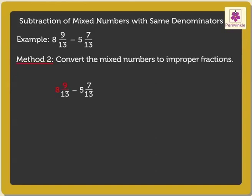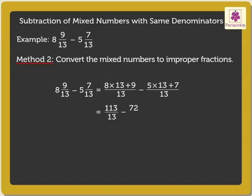Thus, 8 and 9 upon 13 minus 5 and 7 upon 13 equals 113 upon 13 minus 72 upon 13.